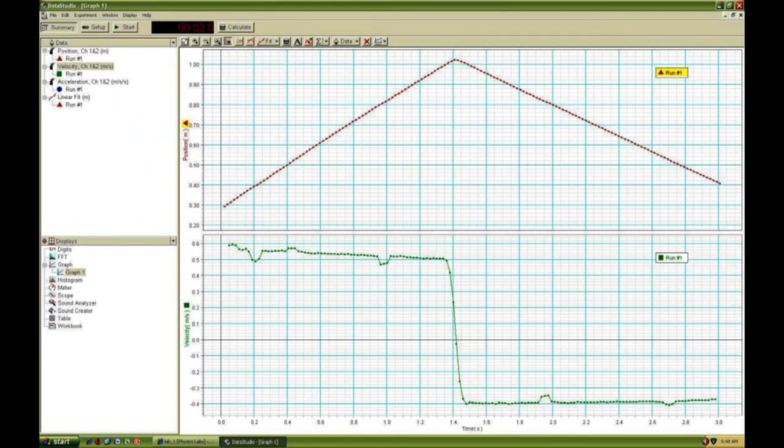Here's typical data for position versus time above and velocity versus time below. When the cart is moving away from the motion sensor, the position increases with time. The slope and velocity are both positive.